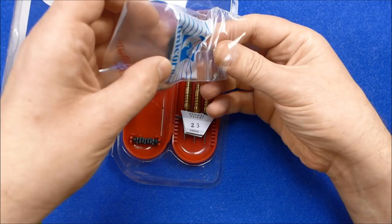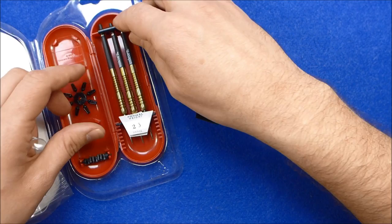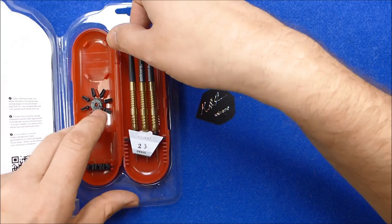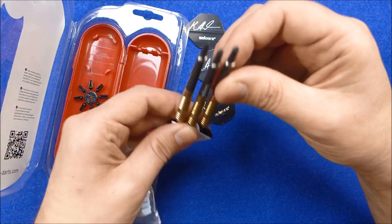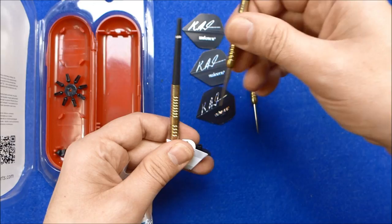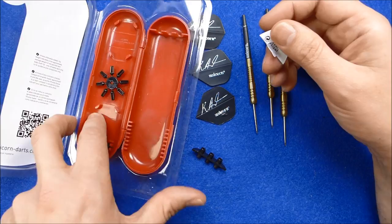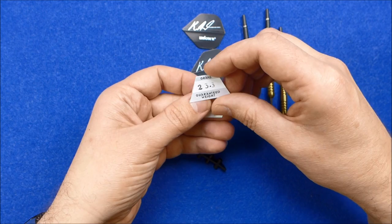Inside the pack you've got some Kyle Anderson signature flights and a Unicorn compact plastic case. You get the darts with Unicorn gripper shafts, I think these are the gripper threes, obviously your three barrels, point protectors, and your little weight guarantee certificate.